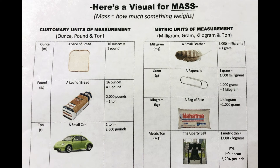For lightweight items, for the customary measurement you would use ounces, like a piece of bread. For the metric system you would use milligrams and grams, which would be like a feather or a paperclip. For medium weight items, customary measurement uses pounds and the metric system uses kilograms. For heavier objects, customary uses tons — which is 2,000 pounds — and the metric system uses metric tons, which are a little bit bigger than the customary ton.